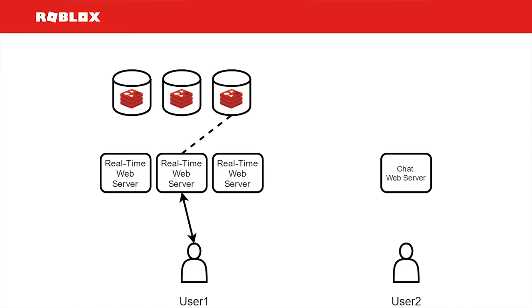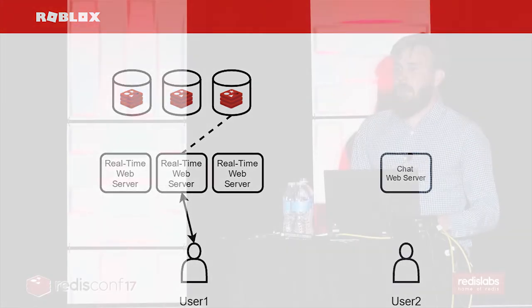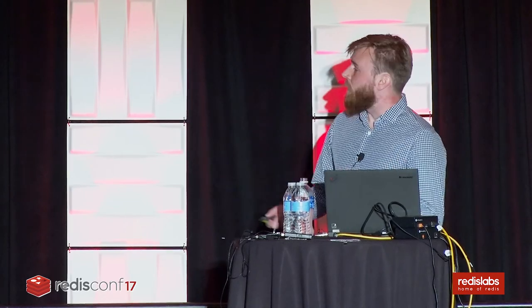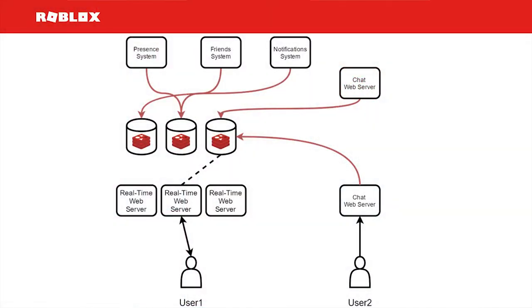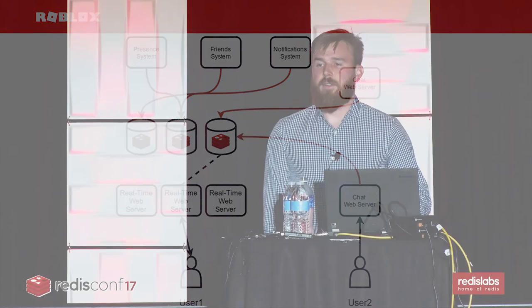In this example it was chat, but the message publishing logic is bundled as a standard component that can be included in any of our server-side applications. So that message could easily come from our presence system when someone comes online or offline, from a friend system when someone accepts or declines a friend request, or from our notification system to increment the notifications counter. Any of our systems can publish to this.